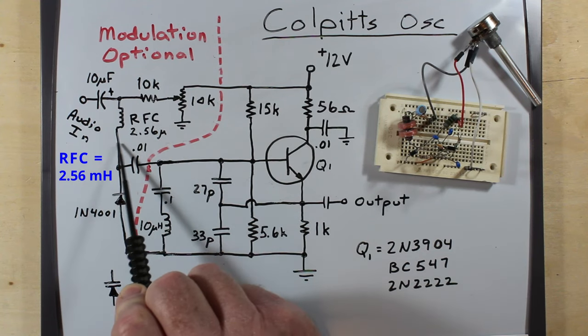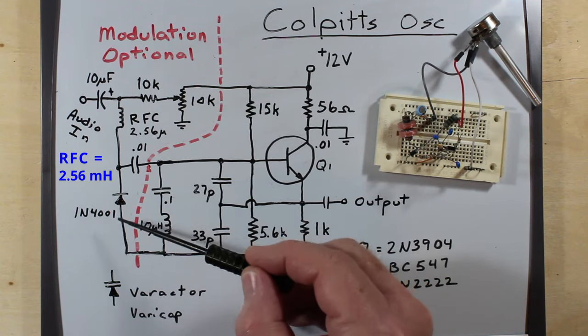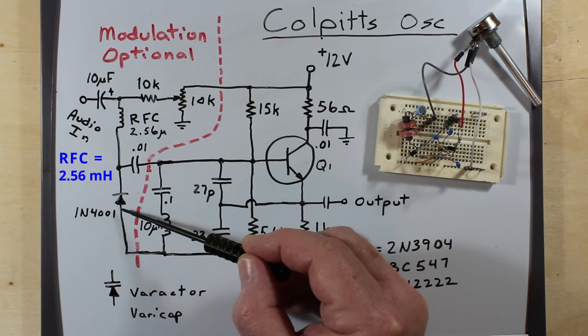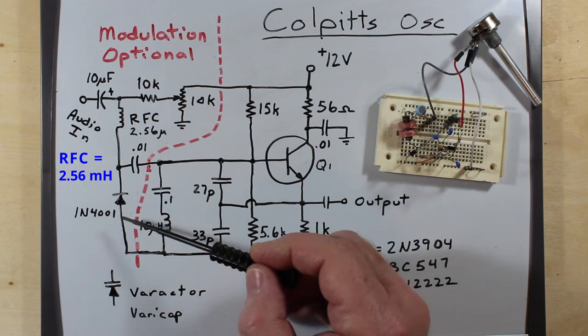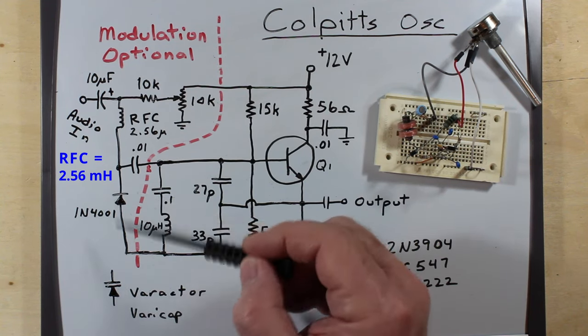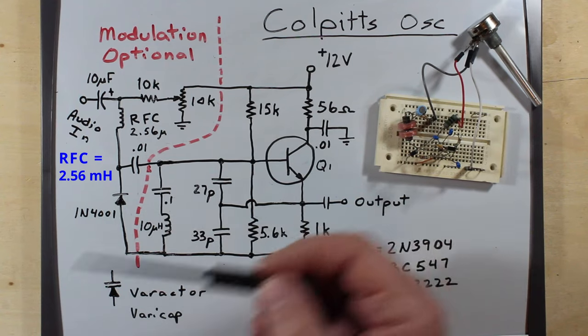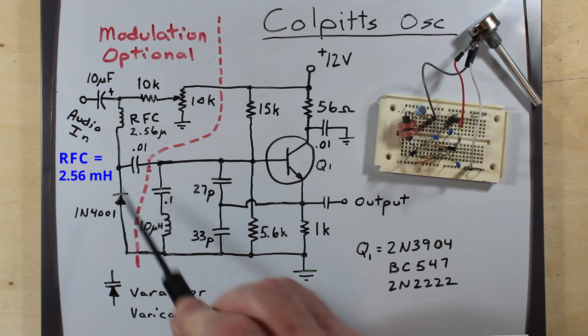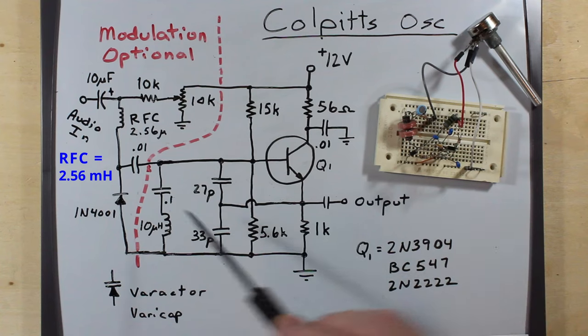And that incoming voltage goes across and varies the capacitance of this diode. All diodes have a certain amount of capacitance in them. And if you reverse bias them a little bit and make that go more or less reverse biased by having an AC or an audio tone on it, that changes that capacitance in this.